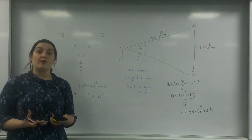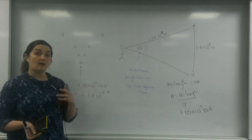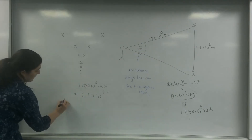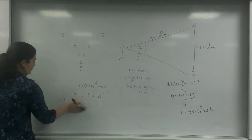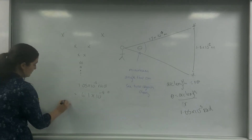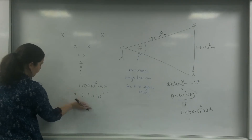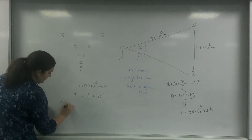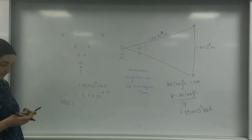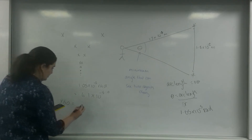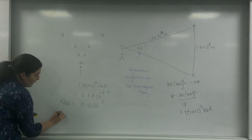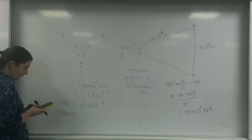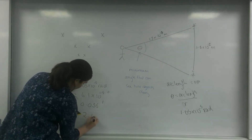I can then convert into arc minutes and arc seconds. If I times the degrees by 60, I get arc minutes — that's 0.036 arc minutes, represented by a single dash. And if I times arc minutes by another 60, I get 2.18 arc seconds.